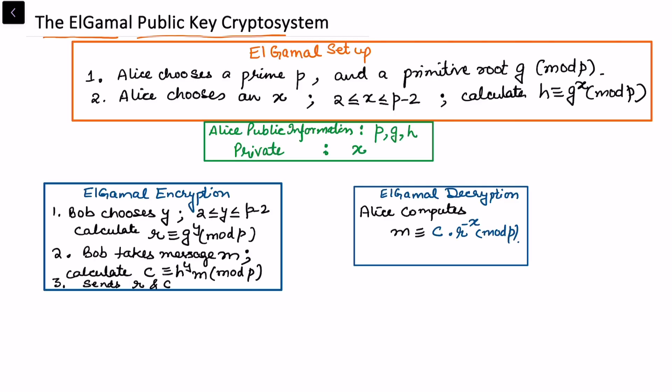In this video we'll be looking at what is ElGamal public key cryptosystem. We look at ElGamal setup. Alice chooses a prime p and a primitive root g. I've explained about primitive roots in my last video, link added in description.